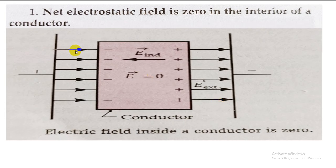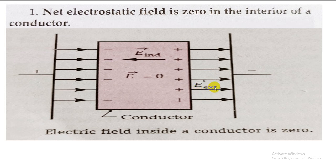To understand this, we take two plates — one positively charged and another negatively charged. The electric lines of force move away from the positively charged plate and end at the negatively charged plate. Note that we are seeing the side view, so the plates are represented by a line only. The external electric field E_ext is the electric field produced by these two oppositely charged plates. A conducting block is then placed in between the two plates.